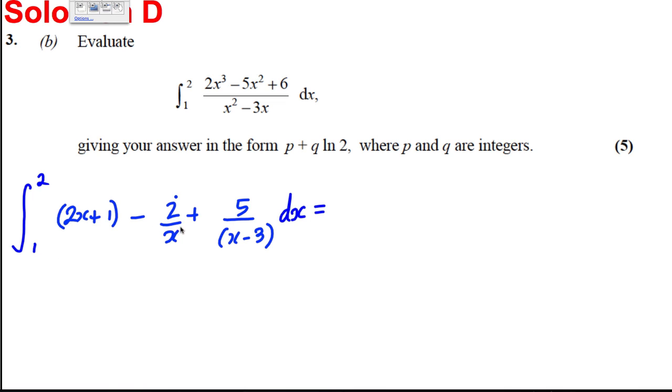Let's integrate this part here, 2x, add 1 to the power and divide, we're going to get x², add 1 to the power and divide, we're going to get plus x. Here the top of the differential at the bottom, it should be 1, so it's -2 ln|x| and this one here is going to be plus 5 ln|x - 3| between 1 and 2.